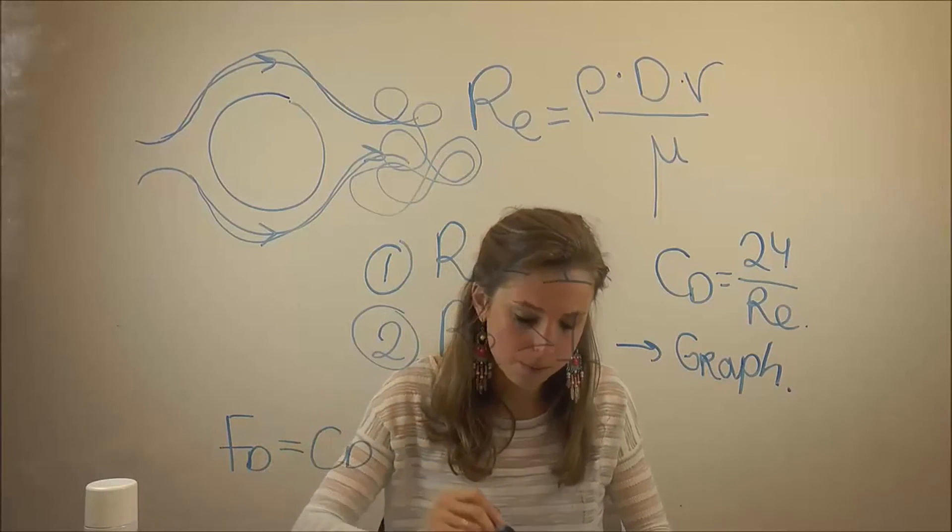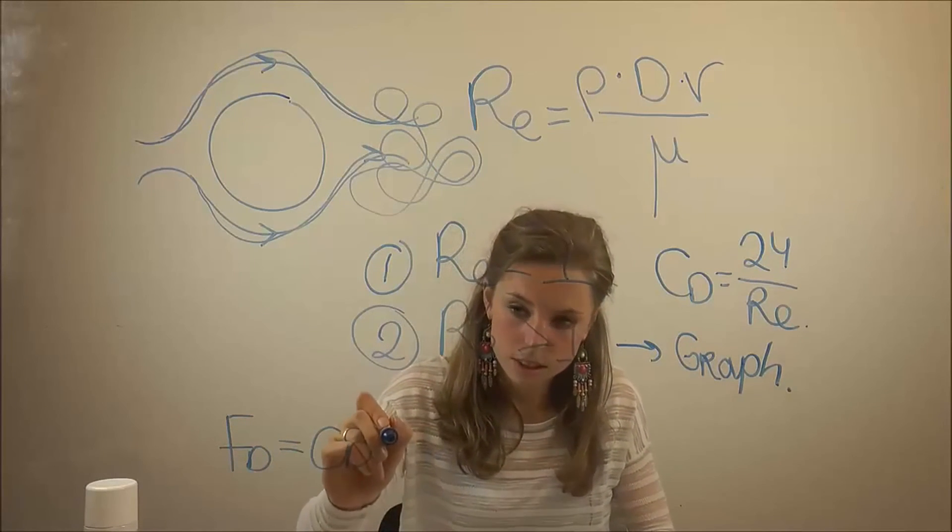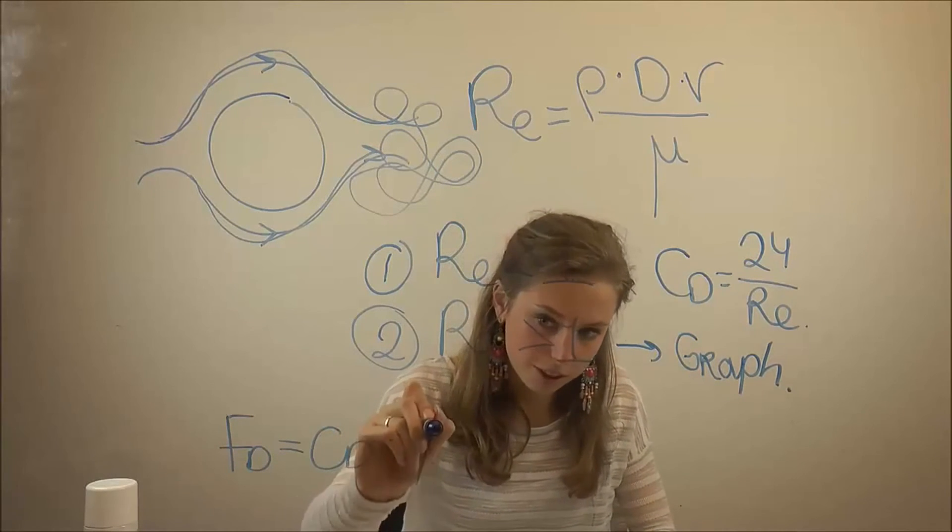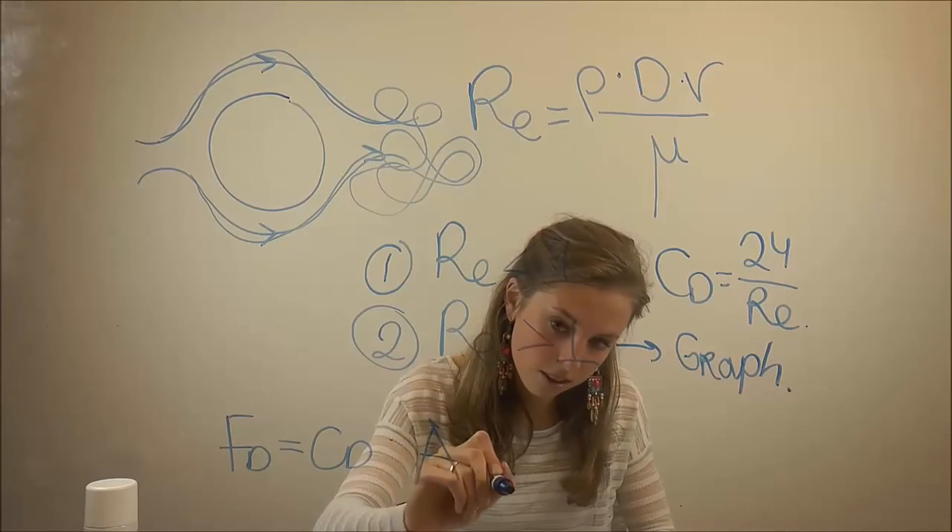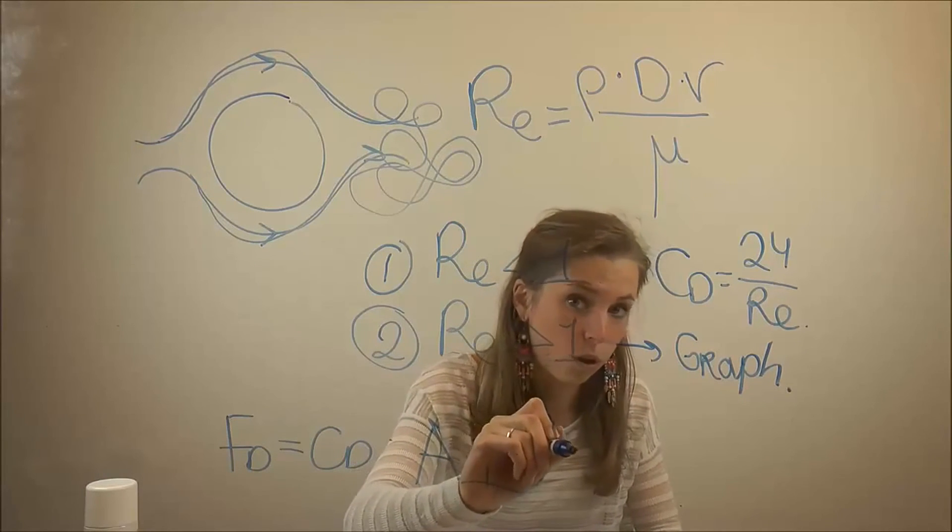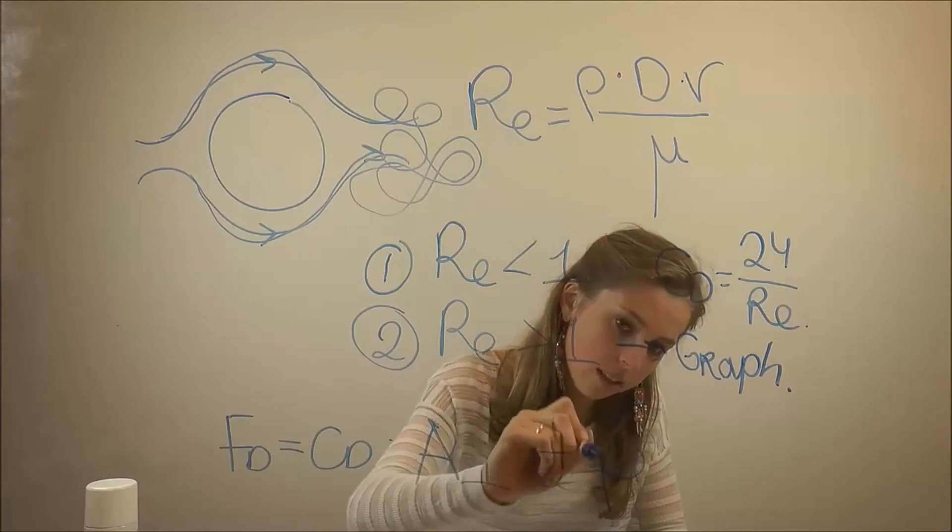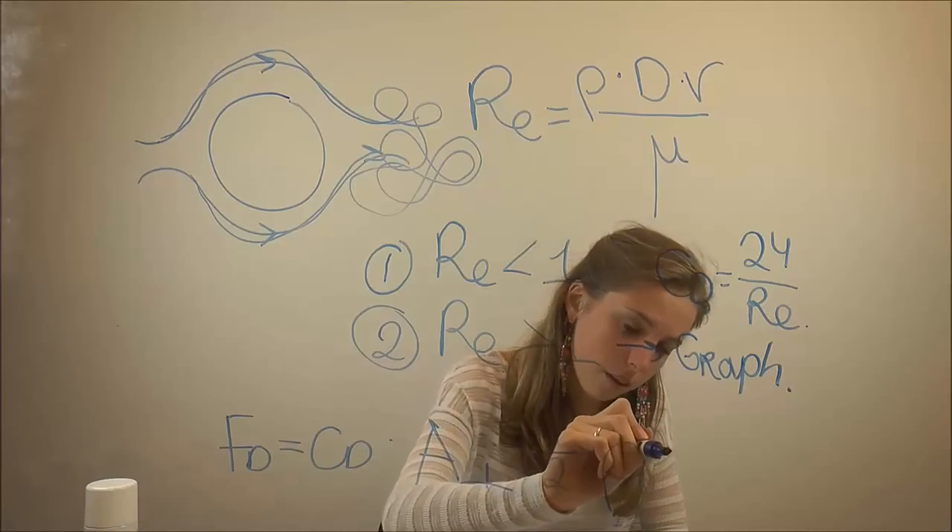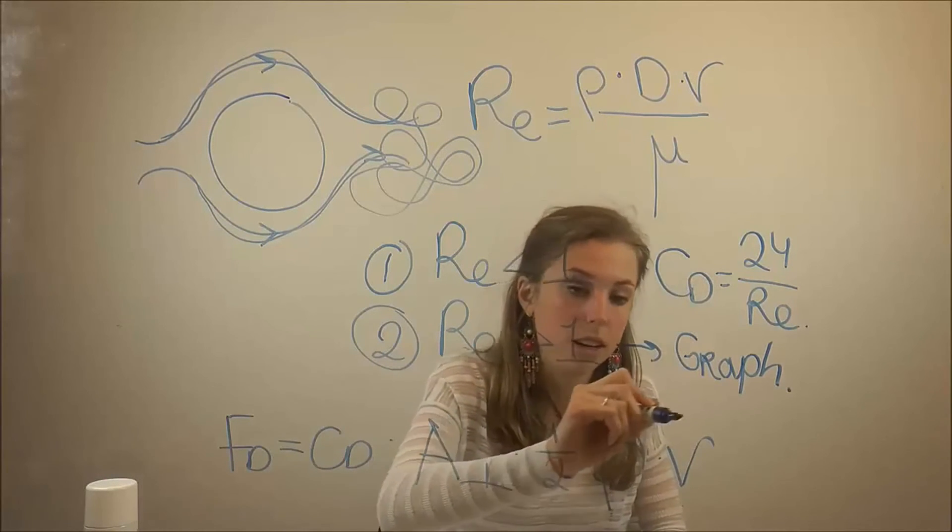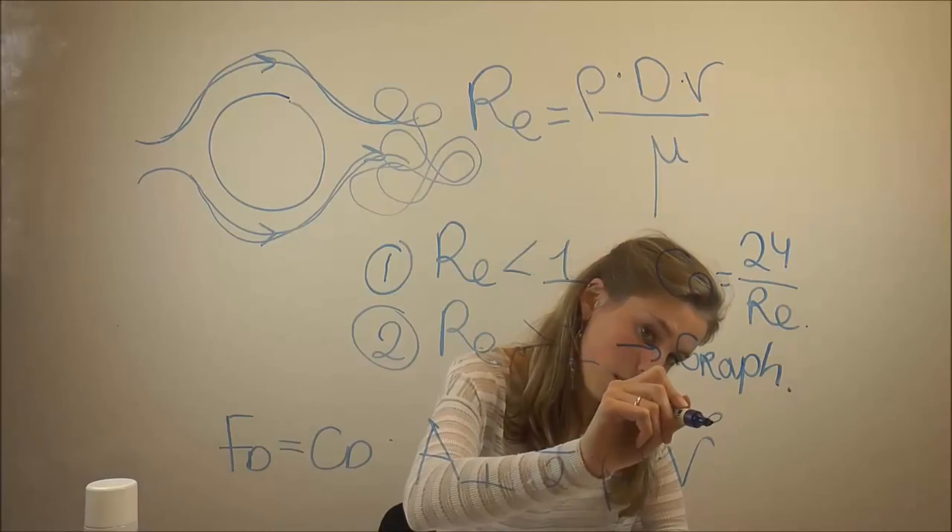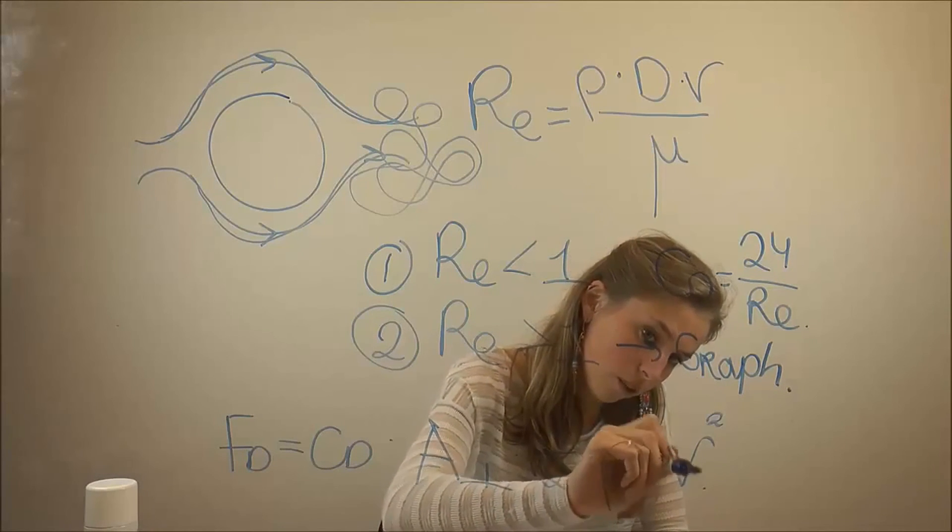You have to multiply the drag coefficient times the cross sectional area times one over two times the density of the fluid times the velocity of the sphere in the fluid. And it's the square velocity.